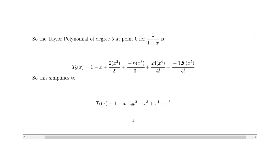So the Taylor polynomial of degree 5 at point zero for 1 over 1 plus x is 1 minus x plus x squared minus x cubed plus x to the 4 minus x to the 5. That completes your answer. Thanks for watching — any questions, leave them below, and please remember to subscribe.